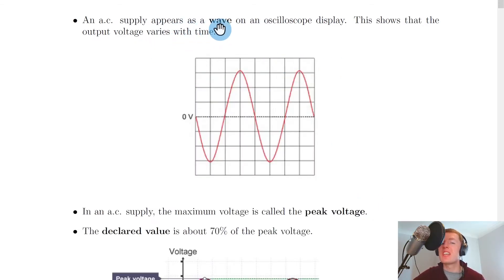An AC supply, however, appears as a wave on an oscilloscope display, and this shows that the output voltage varies with time. So you can see here that we've got a voltage that is changing over time, and that's because the current is changing over time, from the definition of alternating current.